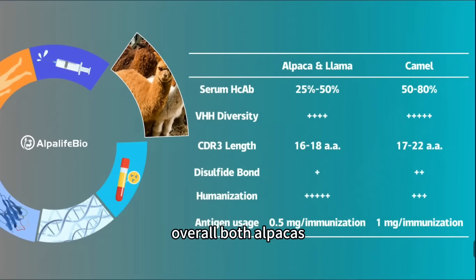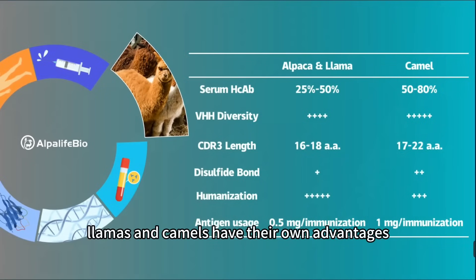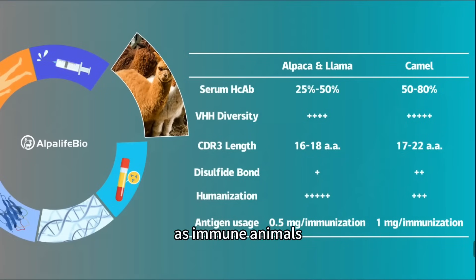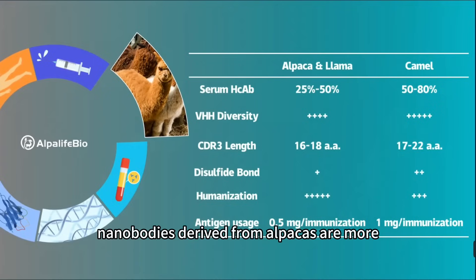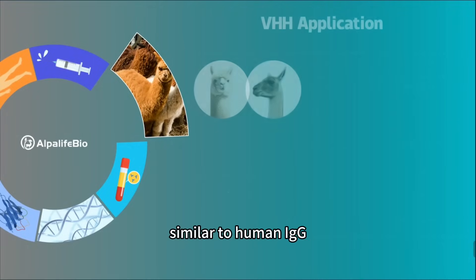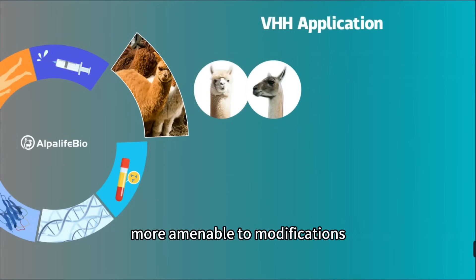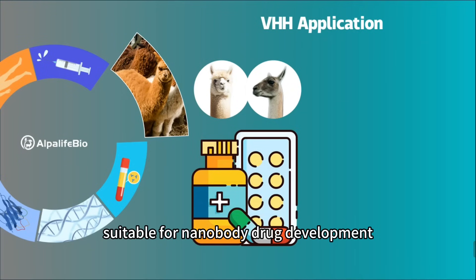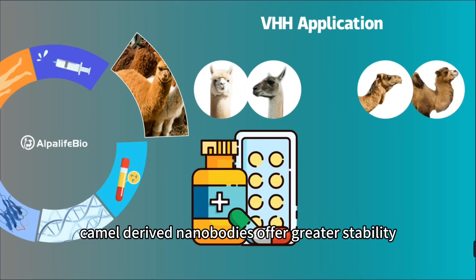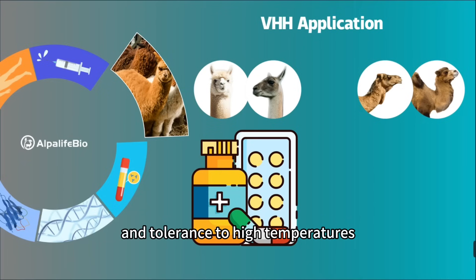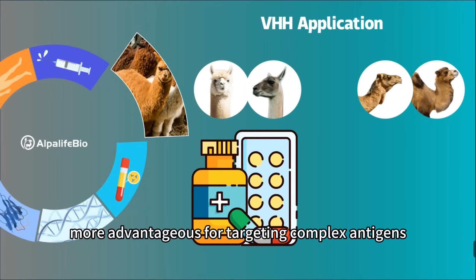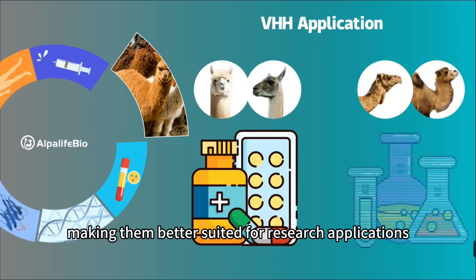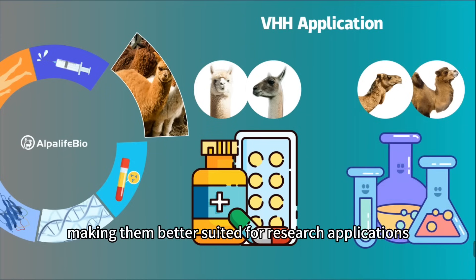Overall, both alpacas, llamas, and camels have their own advantages as immune animals. Nanobodies derived from alpacas are more similar to human IgG, more amenable to modifications, making them more suitable for nanobody drug development. On the other hand, camel-derived nanobodies offer greater stability and tolerance to high temperatures and denaturing conditions, and may be more advantageous for targeting complex antigens, making them better suited for research applications.